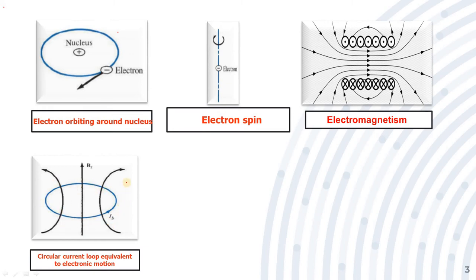The magnetic moment is the product of current into area. Consider the area of the loop as A, so this produces a magnetic moment — we can call it a dipole. So what is a dipole? The magnetic dipole is nothing but the product of the current and the area of the loop. This current is the bound current — that is, it is bound to the atom.